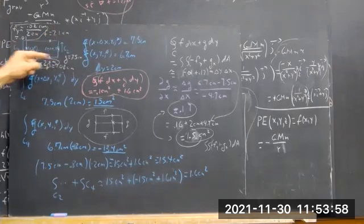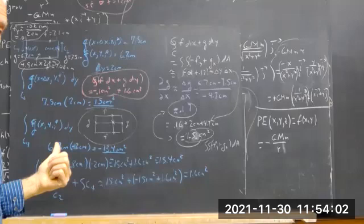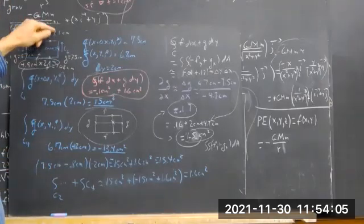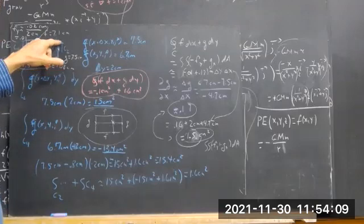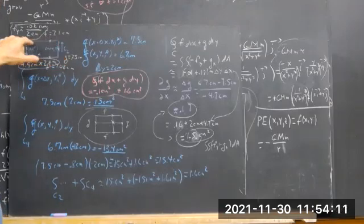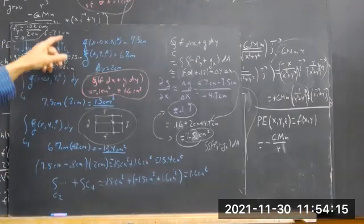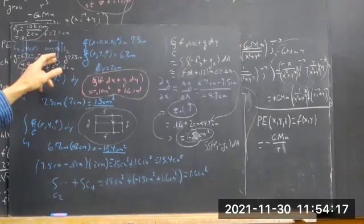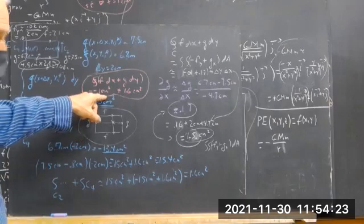Your delta x is 4.7 centimeters here, your delta x is negative 4.7 centimeters here. The difference is 0.02 centimeters. So if you add your integral over C3 to your integral over C1, you get 0.02 centimeters times 4.7 centimeters, which gives you approximately negative 0.1 centimeters squared.